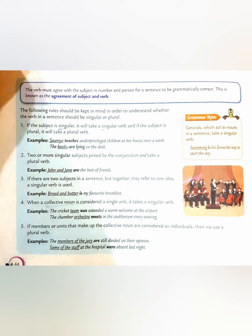Next, two or more singular subjects joined by the conjunction 'and' take a plural verb. For example, John and Jane are the best friends. Here John is a singular subject, Jane is also a singular subject, but together they form a plural subject when they are joined with the conjunction 'and', so it is followed by a plural verb.